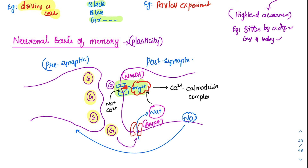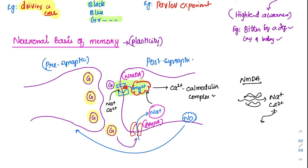Once magnesium is kicked off, NMDA is a more efficient channel. Whenever this channel is open, it will cause an influx of sodium, calcium, and most positive ions. This calcium will go and form the calcium-calmodulin complex, which will further activate the neurotransmitter inside the cell and finally the action will be done.